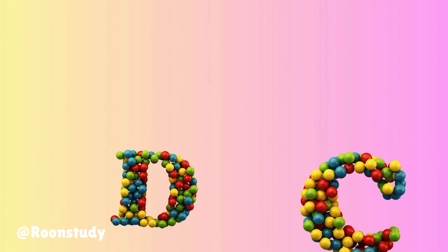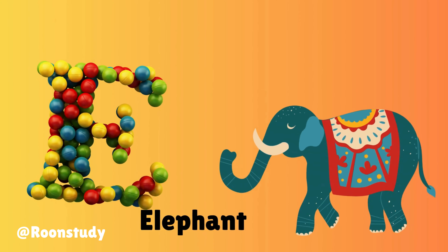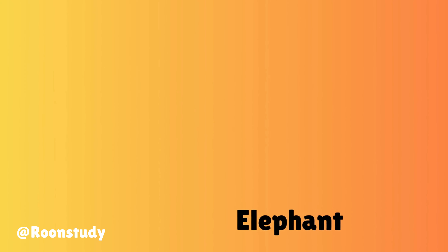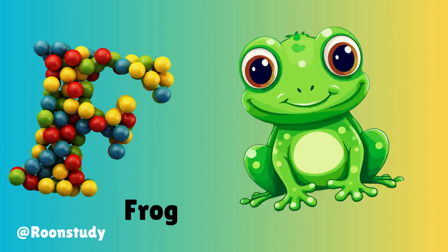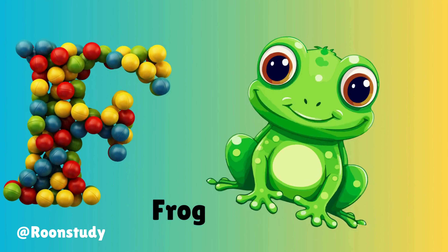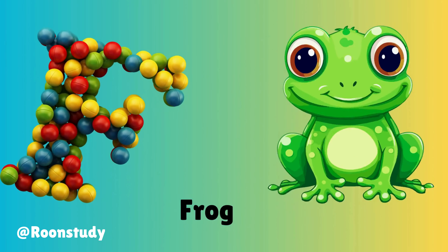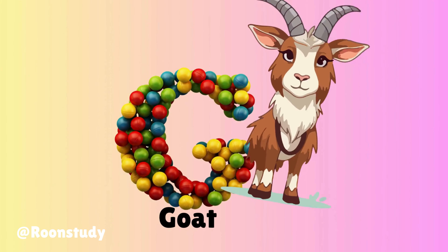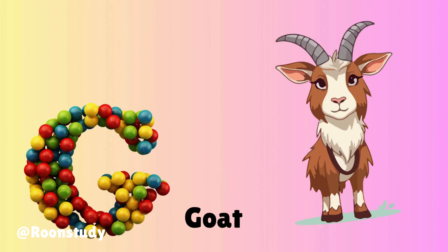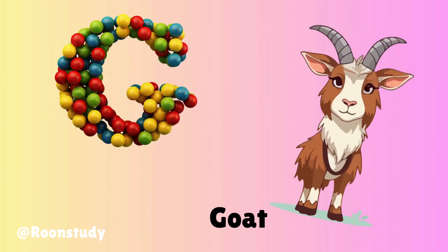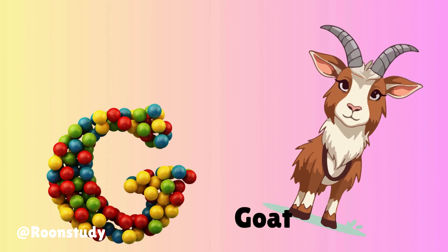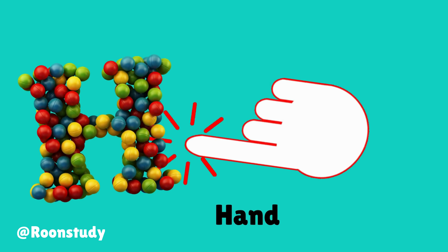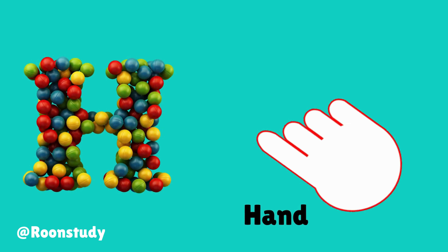E is for elephant, e-e-elephant. F is for frog, f-f-frog. G is for goat, g-g-goat. H is for hand, h-h-hand.